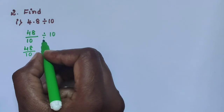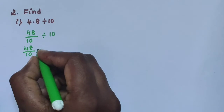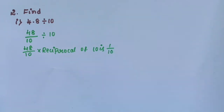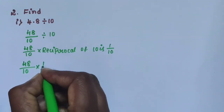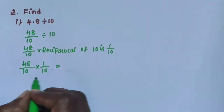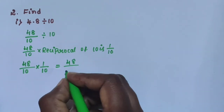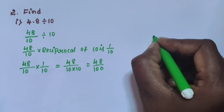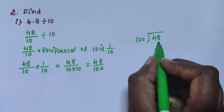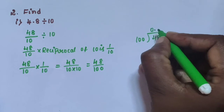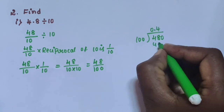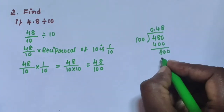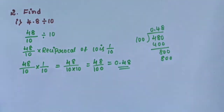48 divided by 10. The division sign can be removed using a reciprocal fraction. The reciprocal of 10 is 1 by 10. So 48 divided by 10 into 1 by 10 gives 48 divided by 100. 48 is smaller than 100, so apply 0.0. 10 fours are 400, remaining 80, 10 eights are 800. The answer is 0.48.